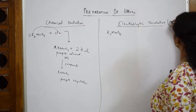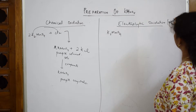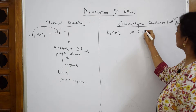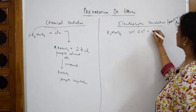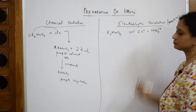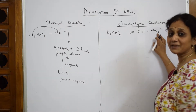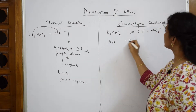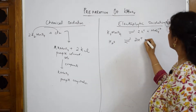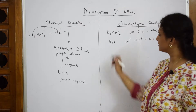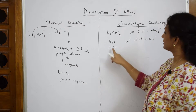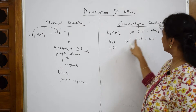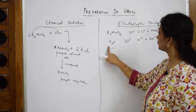Take the K2MnO4 in an alkaline medium. When taken in an alkaline medium, it dissociates into 2K⁺ plus MnO4²⁻ (the manganate ion). In alkaline solution, water also dissociates into H⁺ plus OH⁻.